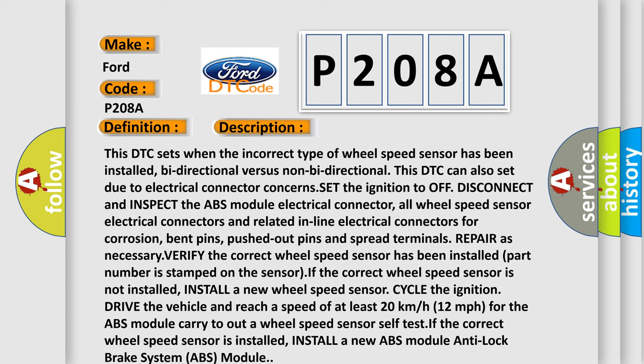Set the ignition to off, disconnect and inspect the ABS module electrical connector. All wheel speed sensor electrical connectors and related in-line electrical connectors for corrosion, bent pins, pushed out pins and spread terminals. Repair as necessary.